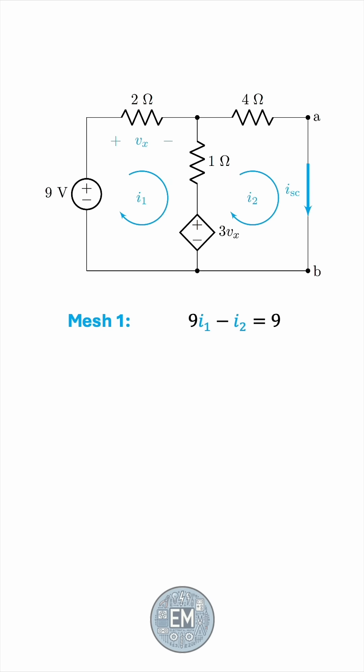We'll do the same KVL procedure for mesh 2. Simplify the equation, replace Vx by 2I1 again, and the equation ends up being negative 7I1 plus 5I2 equals 0.